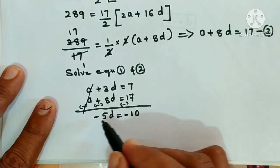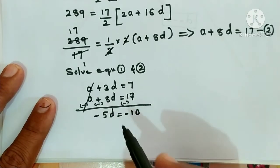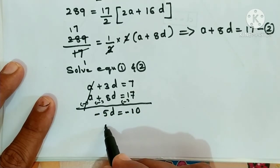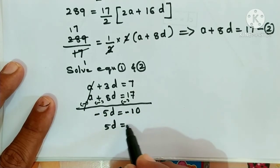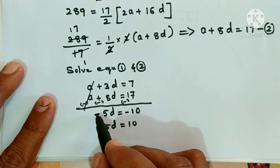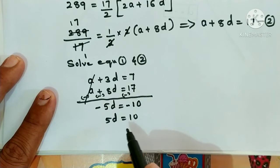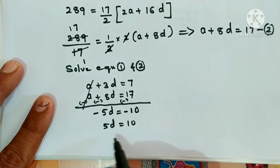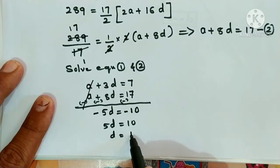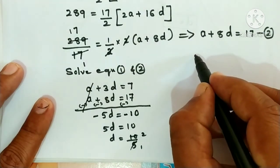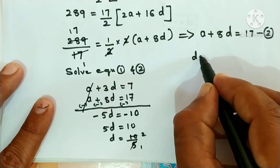Both sides have a minus sign, so ignore it — cancel both side negative signs. We get 5d is equal to 10. Therefore d is equal to 10 divided by 5, which is 2. So d is equal to 2.